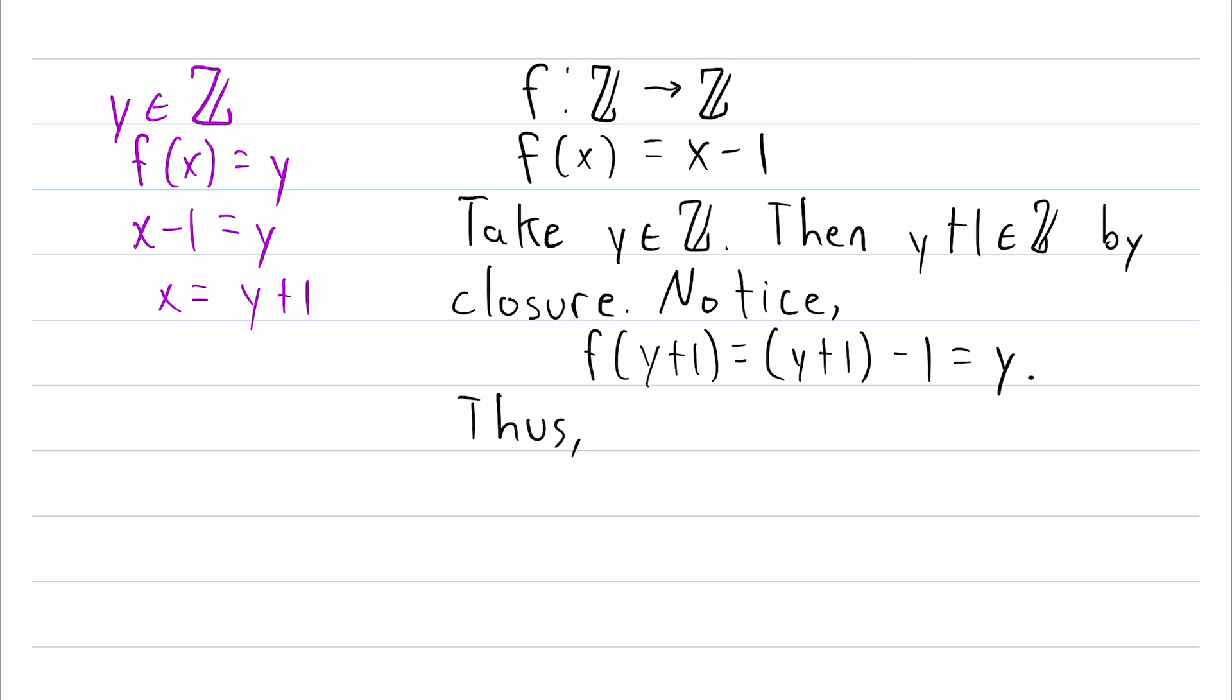We can add a closing remark if we want. Thus f is surjective. So again, the logic of this proof is that we're saying you can give us any arbitrary element of the codomain, and there will always be this element in the domain that maps to that element of the codomain. Thus, by definition, our function is surjective.